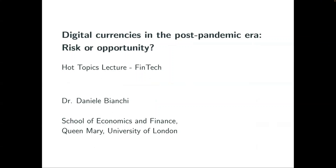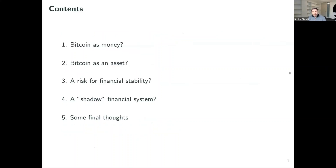Today I'm going to talk about digital currencies, in particular Bitcoin. The rationale is to lay out some of the opportunities but especially some of the risks hidden in this fast-growing new technology. The outline is: Bitcoin as money, Bitcoin as an asset class, risks for financial stability with a focus on shadow banking, and then some final thoughts. I only have question marks here, not necessarily answers — the spirit is to throw out questions and food for thought for the Q&A and future discussions.